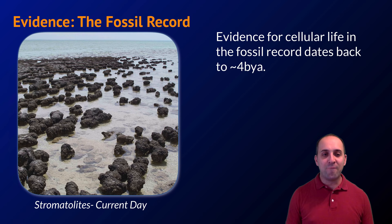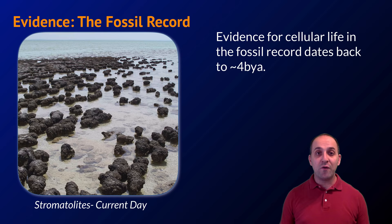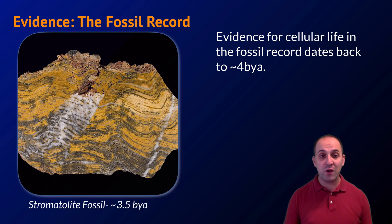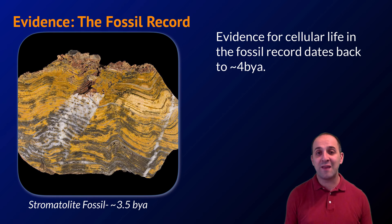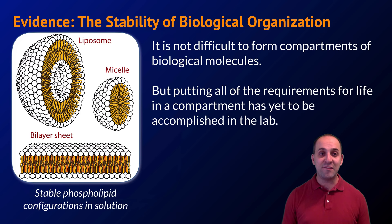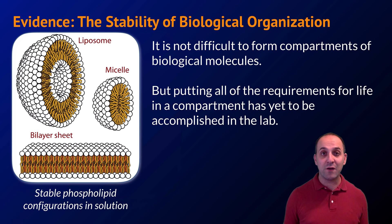Life itself was not produced in that experiment. Looking at the origin of cells, fossil record evidence for cellular life dates back to about four billion years ago. Stromatolites — shown here as modern equivalents — correspond to some of our oldest fossils, with stromatolite fossils from 3.5 billion years ago. Earth is 4.5 billion years old, so by four billion years ago there's already evidence of structures built by cells.